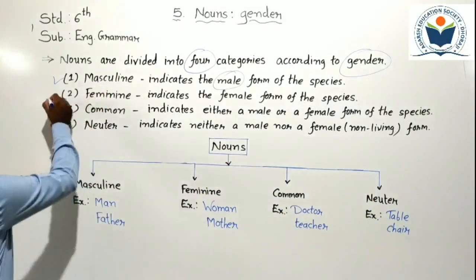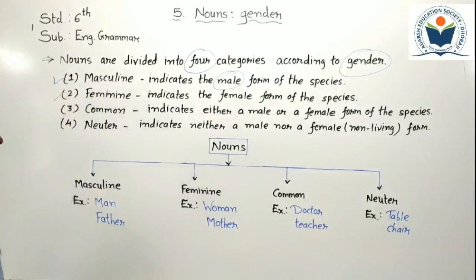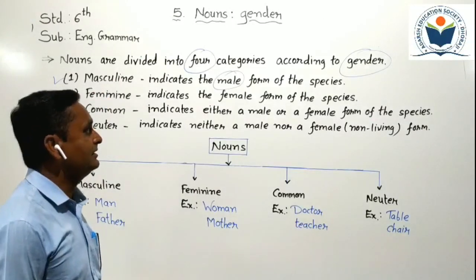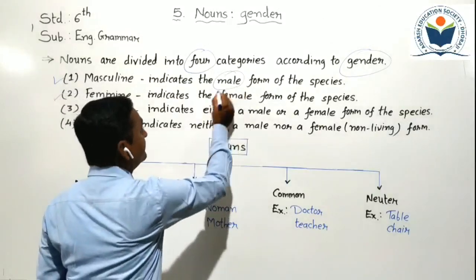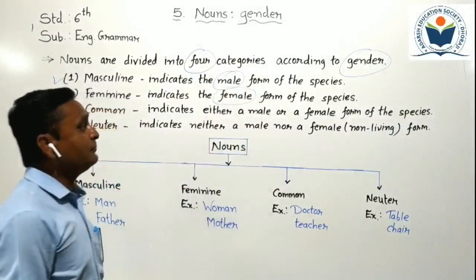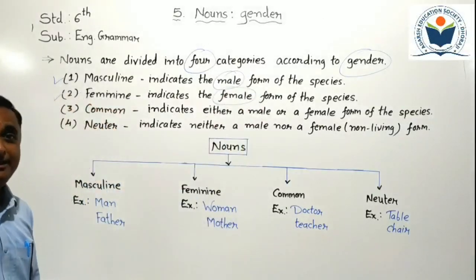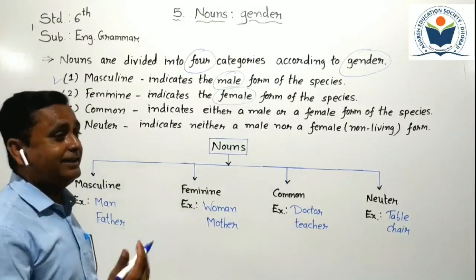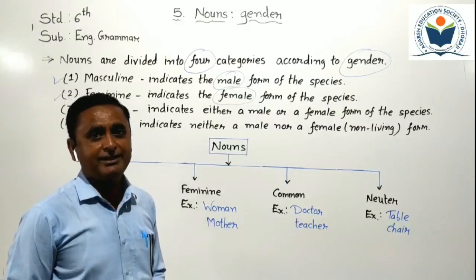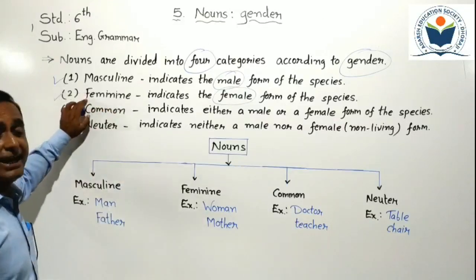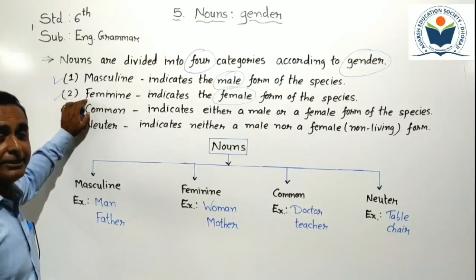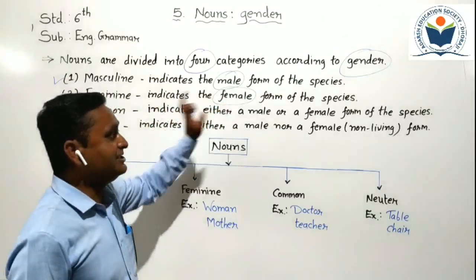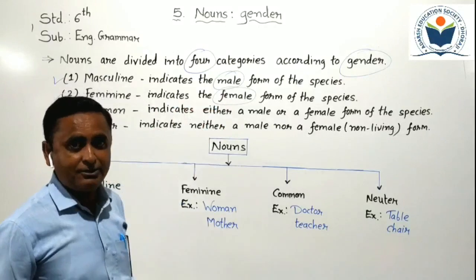The second one is feminine gender. Feminine gender indicates the female form of the species. If the noun indicates the female form of the species — if it is related to a female word — we can say that it is a feminine gender.